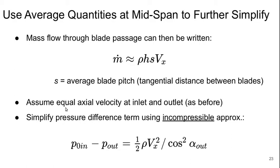We'll assume that the axial velocity is not changing, and then we would simplify the pressure difference term using an incompressible approximation that p-naught in minus p-out would just be one-half rho Vx squared over cosine squared alpha-out.